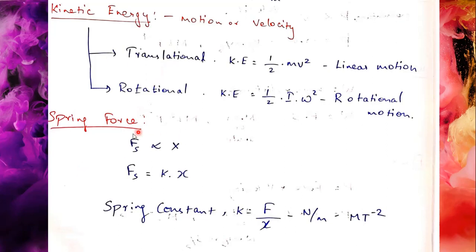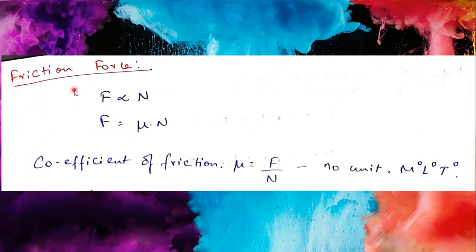There are many types of energy. Spring force is proportional to displacement — F = kx, where k is the spring constant and x is displacement. For friction, the coefficient of friction mu (μ) is defined as capital F divided by N — that is friction force divided by normal reaction. It has no unit; the dimensional formula is M⁰L⁰T⁰.